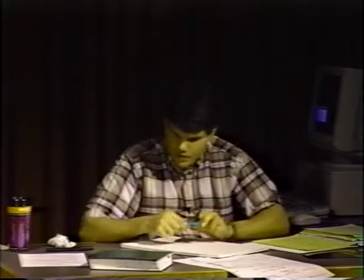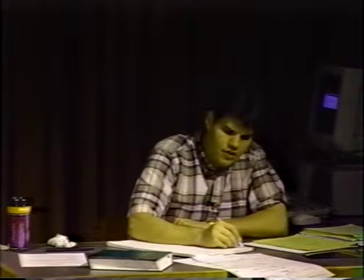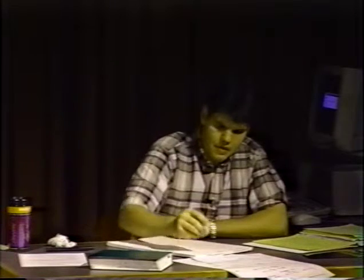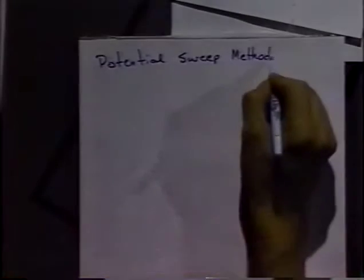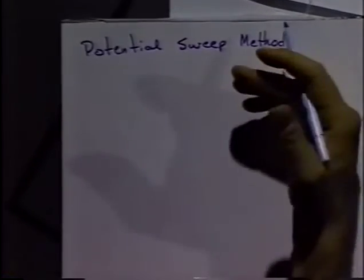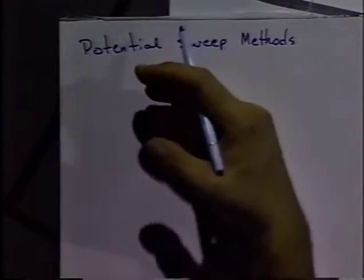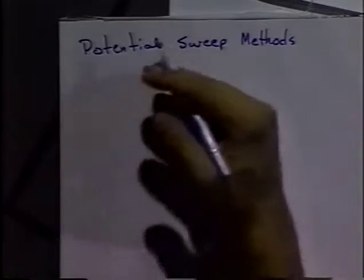Let's start with Chapter 6, picking up where we left off with the simulations, talking about potential sweeps or potential sweep methods. The idea is rather than doing potential steps, which limits you to a particular potential, we continuously vary the potential with time and monitor the current. This adds a lot of value - we can see a lot of additional information in one experiment that would otherwise take many experiments doing potential steps.